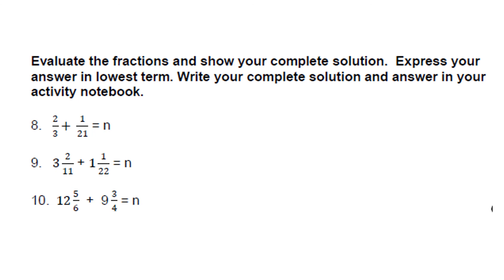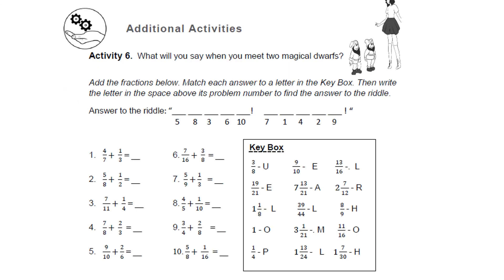For your additional activities: What will you say when you meet two magical dwarves? Add the fractions below and match each answer to a letter in the key box. Then write the letter in the space above its problem number to find the answer to the riddle. There are 10 items — start with number 5 and match its answer to the correct letter, and so on, to solve the riddle.